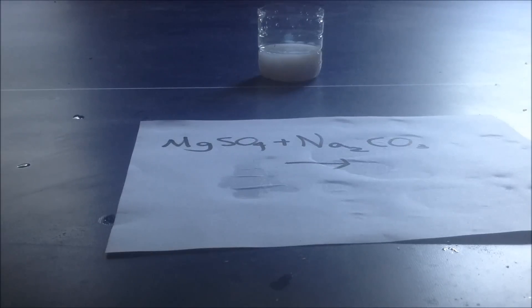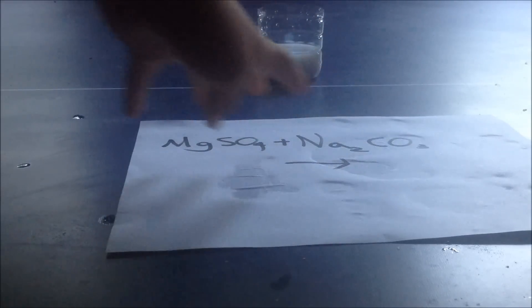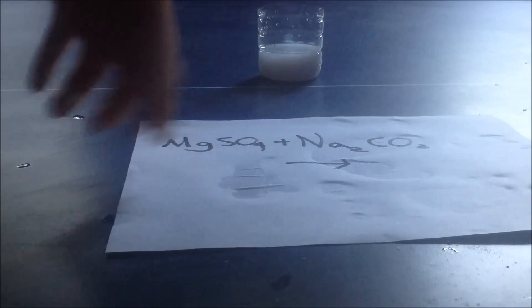This gives you a double displacement reaction, which means these two dissociate into ions in the water. You have positive sodium, negative carbonate, positive magnesium, negative sulfate.